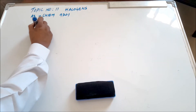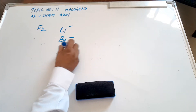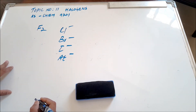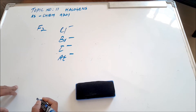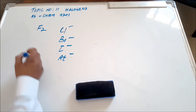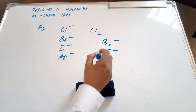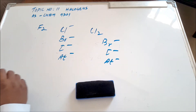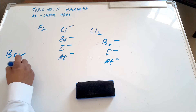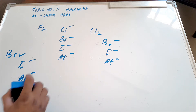For example, fluorine can very easily oxidize chloride, bromide, iodide, and astatide — all less reactive than fluorine. As you go down the halogen family, the reactivity becomes less, and so does the oxidizing tendency. Fluorine can oxidize all of these. Chlorine can oxidize bromide, iodide, and astatide — the ones below it. And bromine can only oxidize iodide and astatide. So clearly, as you come down the halogen family, the oxidizing tendencies are becoming less.